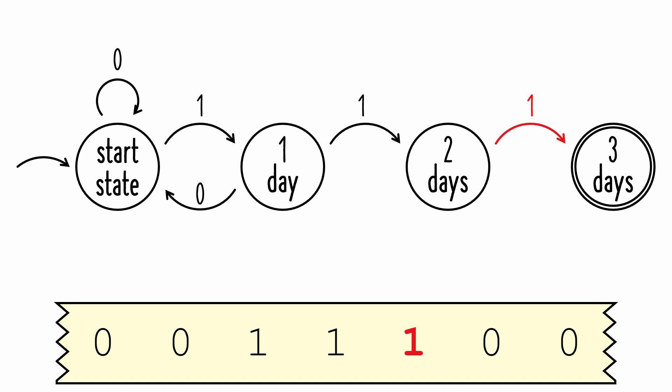Had it been a 0, we would have gone back to the start state. Since we're in the final state, any remaining input values will not change our state. Even though the last two temperatures were below 90 degrees, we've already determined that we had a heat wave earlier in the week.